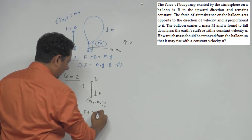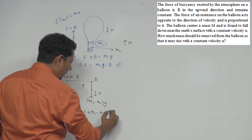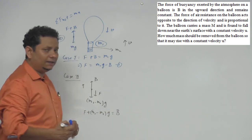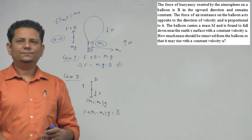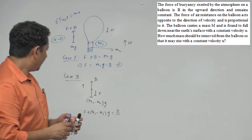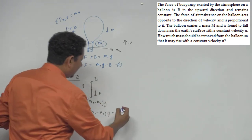f plus M1 minus M2 times G will be equal to B. So this is your second equation.